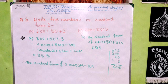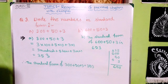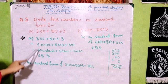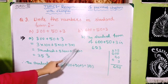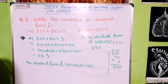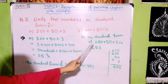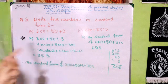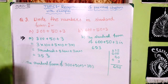Our third question is 'write the numbers in standard form,' where numbers are given in expanded form and we convert them. For 300 + 50 + 3, we write the places: three hundreds, five tens, three ones, giving the standard form 353. For 600 + 50 + 3, by adding the numbers we get the standard form 653. You can use either method to arrive at the answer.